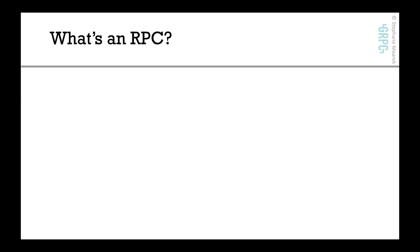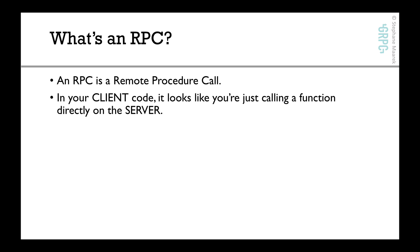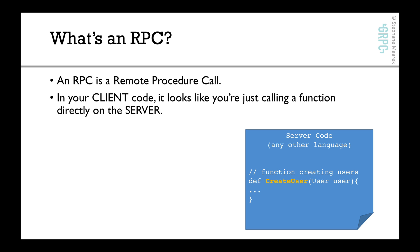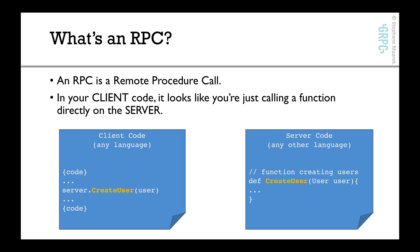So what's an RPC — a remote procedure call? In your client code, it will look like we're calling a function directly on the server. Here's our server code — think of any language — we'll have a function called createUser. Then in the client code, in any other language, we'll have our code and it'll say server.createUser. The createUser is matching, so it looks like on the client code we're directly invoking a function on the server — and that's what's called an RPC call. There is something that happens over the network, but that's what it looks like in our code, and that's what makes RPC awesome.